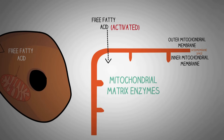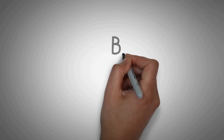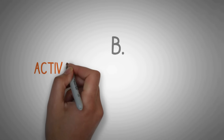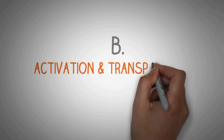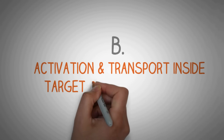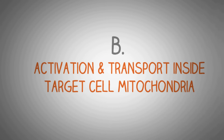Before the free fatty acid can be transported into the mitochondrial matrix, it must be activated. Let's talk about the activation and transport of free fatty acids inside the target cell mitochondria — starting with fatty acid activation.